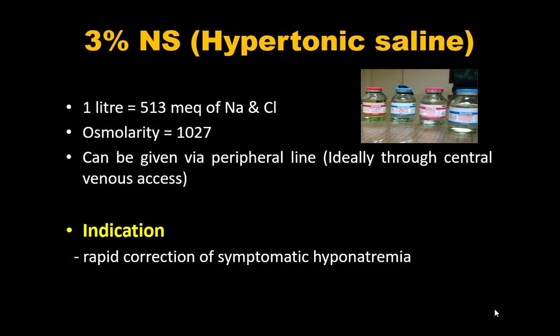Indications for 3% NS are: rapid correction of symptomatic hyponatremia when the patient is drowsy or having seizures. Correction should not exceed 10–12 mEq/L in 24 hours. The second indication is treatment of raised ICP — either in acute liver failure or traumatic brain injury.